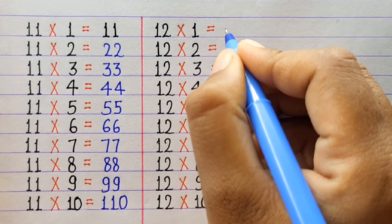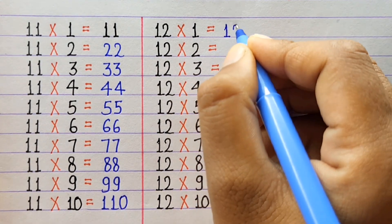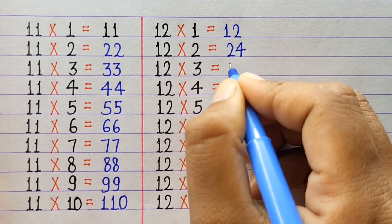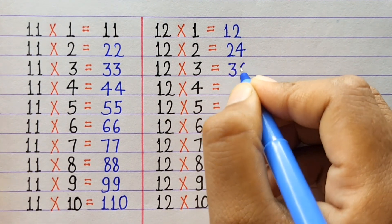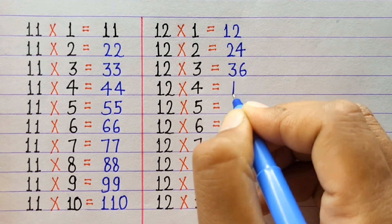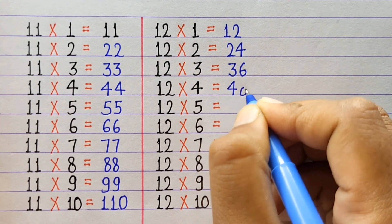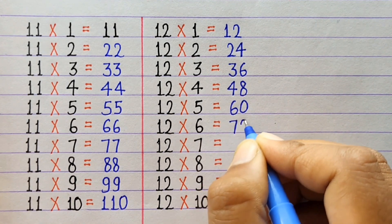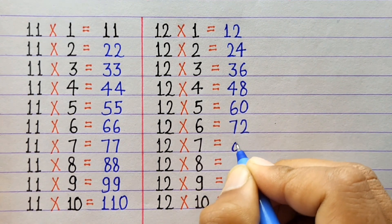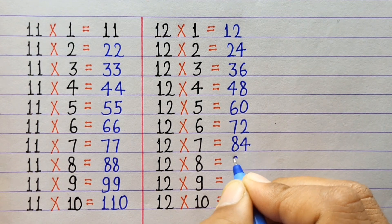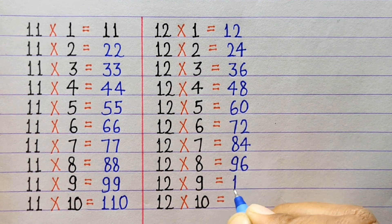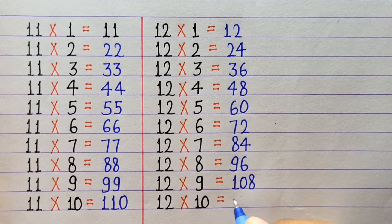12×1=12, 12×2=24, 12×3=36, 12×4=48, 12×5=60, 12×6=72, 12×7=84, 12×8=96, 12×9=108, 12×10=120.